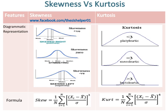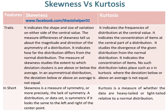The formula of skewness and kurtosis is also given for comparison. There are many traits of skewness: it indicates the shape and size of variation on either side of the central value. The measure of skewness tells us about the magnitude and direction of the asymmetry of a distribution. It indicates how far the distribution differs from the normal distribution, and studies the extent to which deviation clusters above or below the average. In an asymmetrical distribution, the deviation below or above an average is not equal.